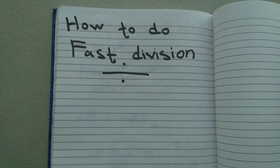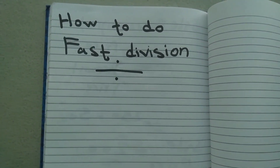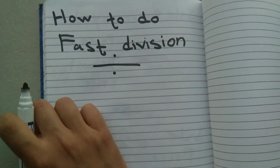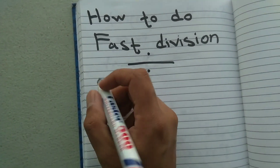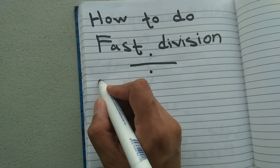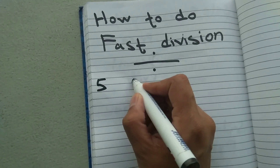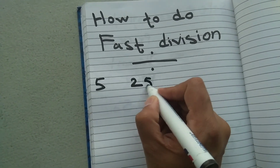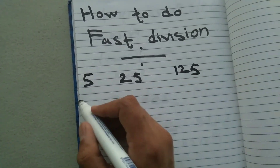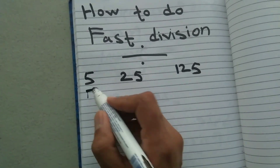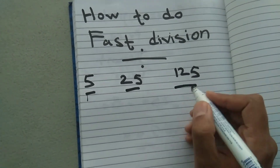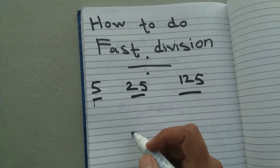Hello guys, I hope you're all doing okay. Today I'm going to teach you how to do fast division. This fast division method only works for the numbers 5, 25, and 125 — meaning if you want to divide any number by 5, 25, or 125, this trick applies.